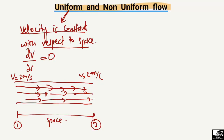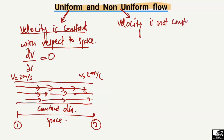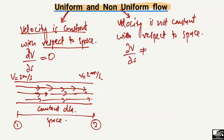Now let's define non-uniform flow. It is a type of flow where the velocity is changing with respect to space — the velocity is not constant with respect to space. In mathematical form, dV/ds will not be equal to zero, because velocity varies at every point.